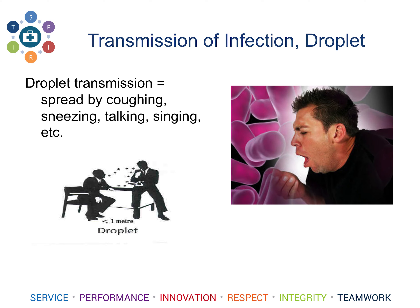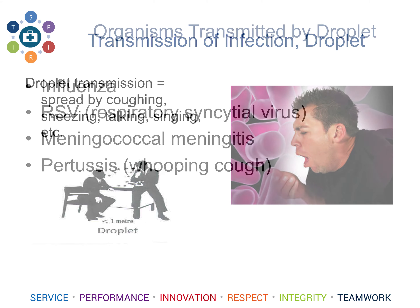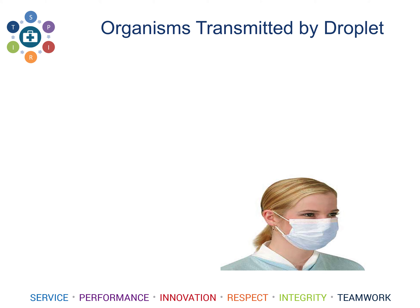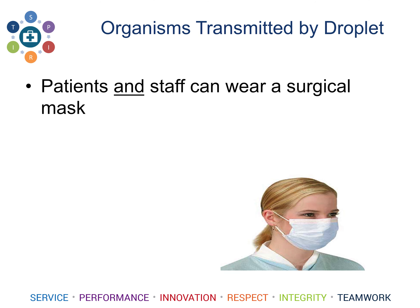Droplet precautions involve organisms spread by coughing, sneezing, talking, etc. Some organisms spread by droplet are influenza and all respiratory viruses, including respiratory syncytial virus, meningococcal meningitis, pertussis, and whooping cough. For droplet precautions, the healthcare worker wears a surgical mask. Patients and staff can wear a surgical mask to help reduce the risk of infection. Droplet precaution organisms have very heavy wet secretions and do not travel far, and the surgical mask can catch these secretions.